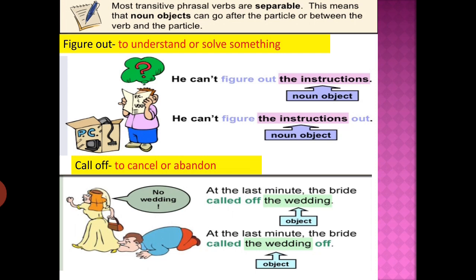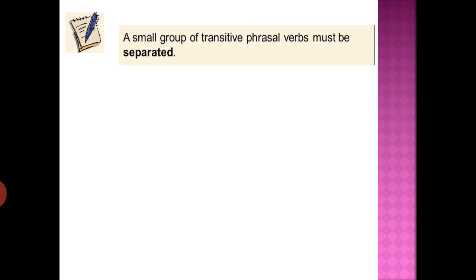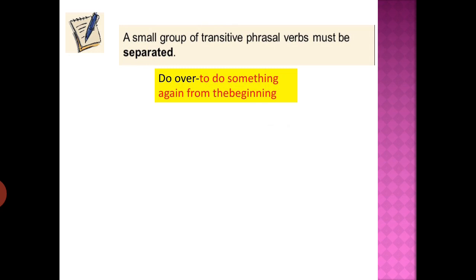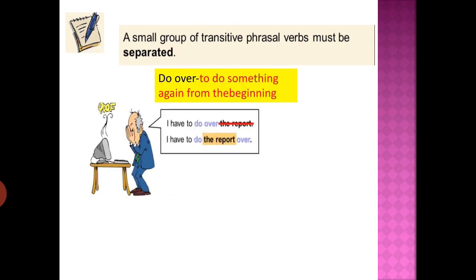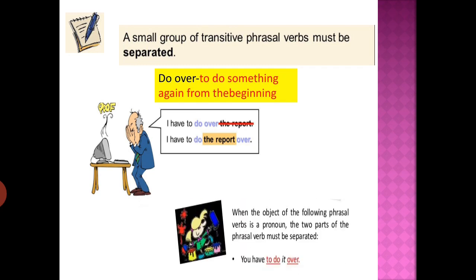'Call off' means to cancel or abandon. 'The bride called off the wedding' — the object 'the wedding' can also go between 'called' and 'off': 'The bride called the wedding off.' However, some transitive phrasal verbs must be separated. For example, 'do over' means to do something again from the beginning. 'I have to do over the report' is wrong; it must be 'I have to do the report over.' With a pronoun, say 'You have to do it over.'